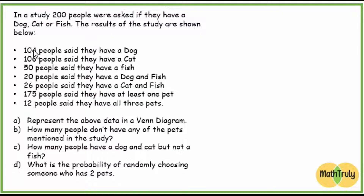So we have: 104 people said they have a dog, 106 people said they have a cat, 50 people said they have a fish, 20 people said they had a dog and fish, 26 people said they had a cat and fish, 175 people said they have at least one pet, and 12 people said they have all three pets.